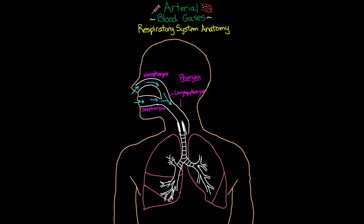The laryngopharynx continues downward and is a common pathway for both air and food. Food continues down into the esophagus, prevented from entering the respiratory system by the epiglottis. Air works its way down into the next area — the larynx — where you'll also find the voice box. This is the first true distinction of a separate pathway for air, separate from where food travels. The larynx marks the end of what we call the upper airway.